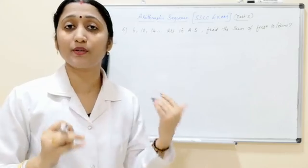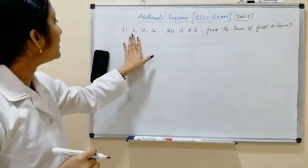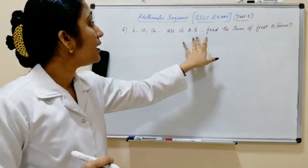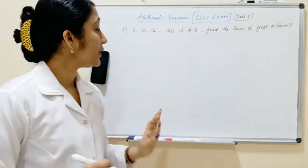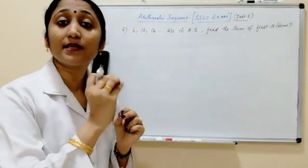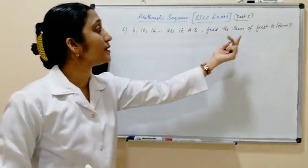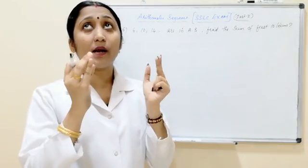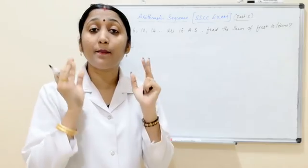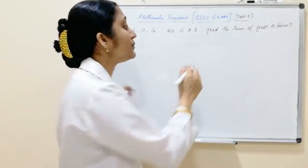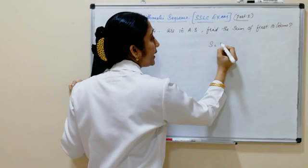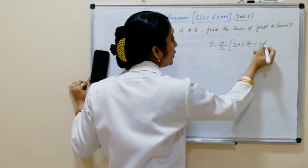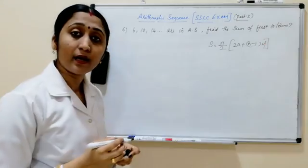Let's find the sum of the first ten terms. Here, given is an arithmetic sequence. We will check the sum of the first ten terms using the formula: Sum equals n by 2 into 2a plus n minus 1 into d.